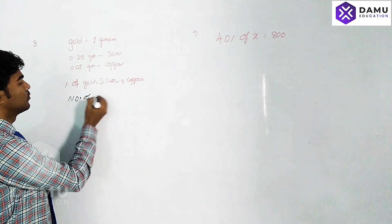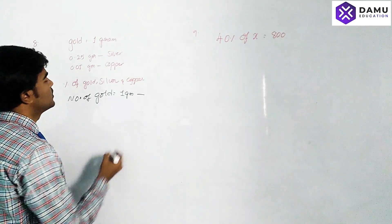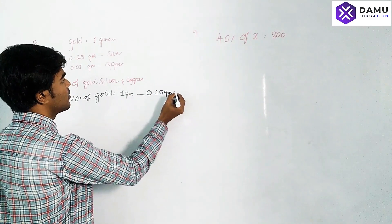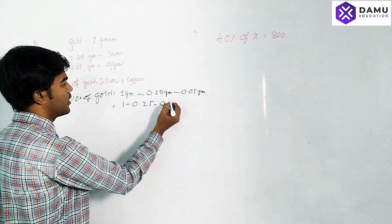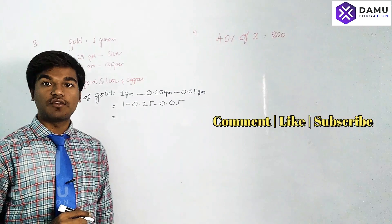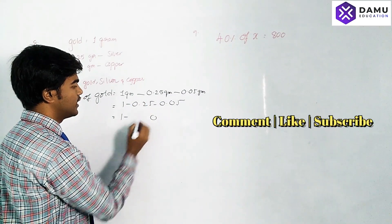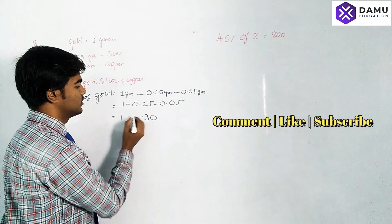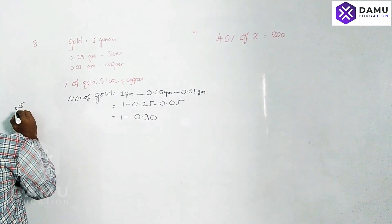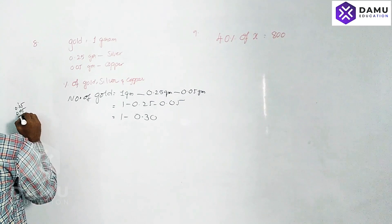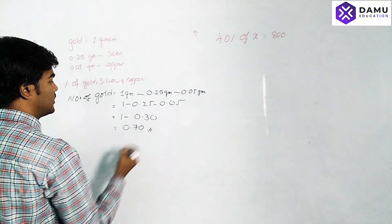Number of grams of gold will be equal to 1 gram minus 0.25 grams minus 0.05 grams. So 0.25 plus 0.05 equals 0.30, therefore 1 minus 0.30 equals 0.70. So there is 0.70 grams of gold in every one gram of gold.